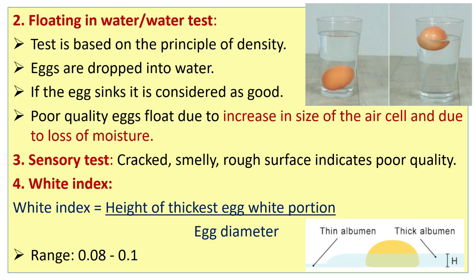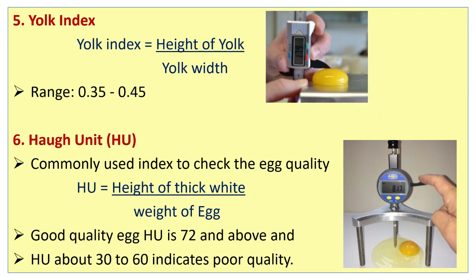White index is equal to the height of the thickest egg white portion divided by egg diameter, ranging usually between 0.08 to 0.1. Yolk index is the ratio of height of yolk divided by yolk width, usually ranging between 0.35 to 0.45.